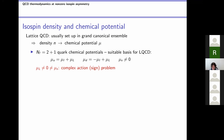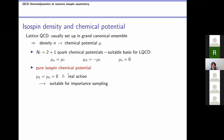QCD at finite isospin density is something we want to study from the lattice. On the lattice, the system is set up in the grand canonical ensemble, where densities are traded for chemical potentials. A suitable basis for lattice QCD simulations expresses the up, down, and strange quark chemical potentials through the isospin, light-quark baryon, and strange quark chemical potentials. If either the light-quark baryon or strange quark chemical potential is non-zero, we have a complex action problem and cannot do simulations. However, if both are zero, we are at pure isospin chemical potential, we have a real action and actually can do our simulations.